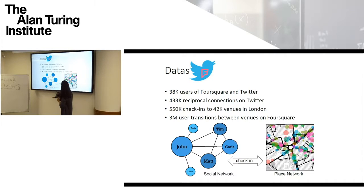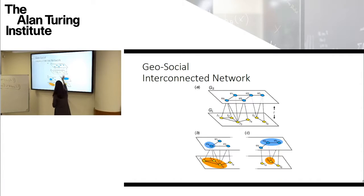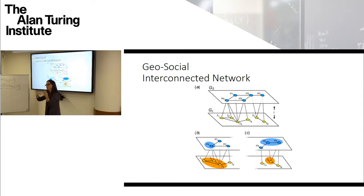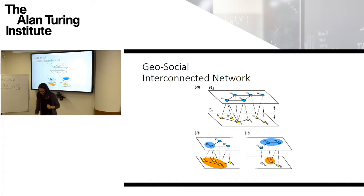We have check-ins of places like you've seen in the animation and we have the social network of people connected. You have your social network and your place network, where transitions are defined by the check-ins of people going from one place to the next. A person might visit this location, then the computer lab in Cambridge, then home or a particular café. A user has a group of locations they visit, and these locations have links defined by who goes from one place to another. Similarly, a place corresponds to a group of users who may or may not have a link.